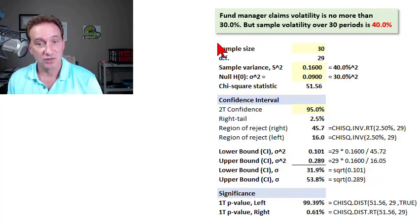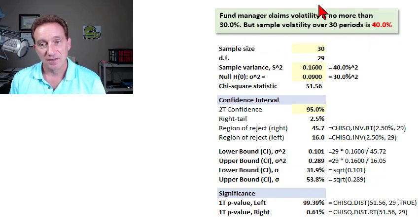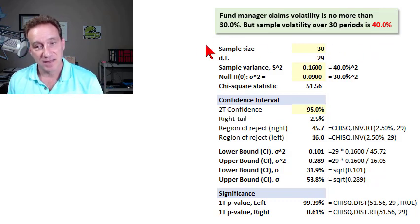Here's the problem statement. For example, a fund manager claims that volatility for the fund is no more than 30%. But we observe a sample volatility over 30 periods that is 40%. And the question is, do we believe the fund manager?